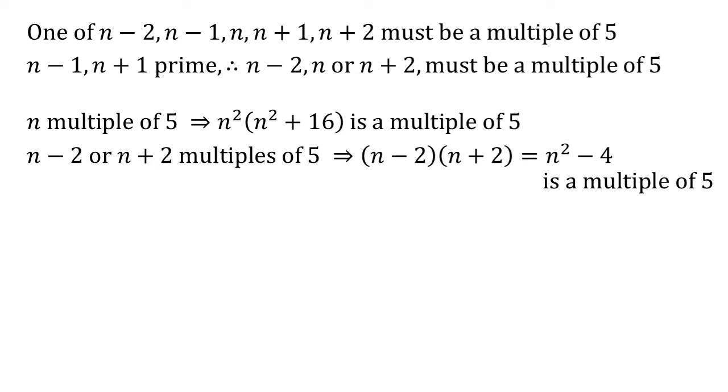So we've just shown that n squared minus 4 would be a multiple of 5, but the expression we're looking at we can rewrite n squared plus 16 as n squared times n squared minus 4 plus 20. If n squared minus 4 is a multiple of 5, adding 20 to it will keep it a multiple of 5, so the full expression is also a multiple of 5.